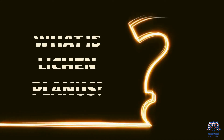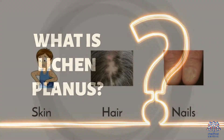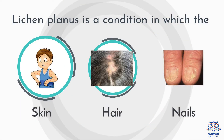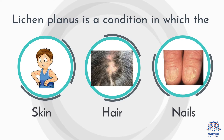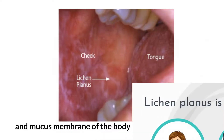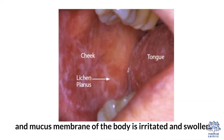What is Lichen Planus? Lichen Planus is a condition in which the skin, hair, nails, and mucous membrane of the body are irritated and swollen.